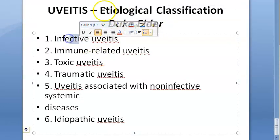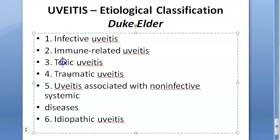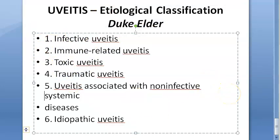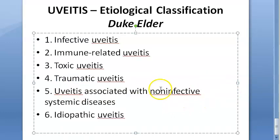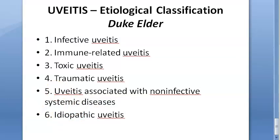Lastly, etiological classification — also called the Duke-Elder classification — includes: infective, immune-mediated, toxic, traumatic, non-infective systemic diseases, and idiopathic. Anterior uveitis and intermediate uveitis are mostly idiopathic.